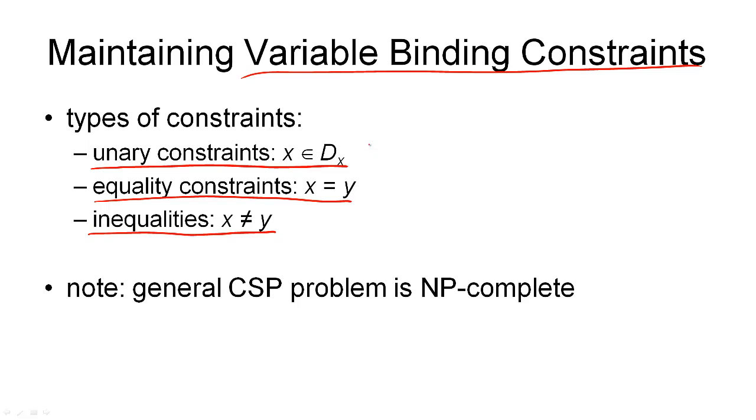The unary constraints and the equality constraints, they are quite easy. These can be dealt with in linear time, and don't cause any problems. The inequality, however, causes us a little trouble, because inequality constraints cause exponential complexity in this type of constraint network. So with the inequalities, this becomes a general constraint satisfaction problem. And a general constraint satisfaction problem is NP-complete.